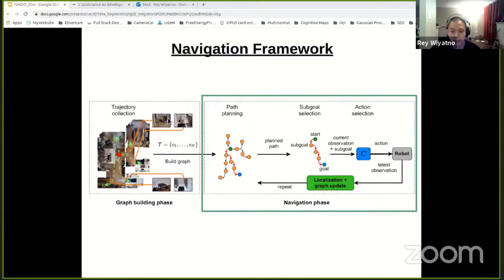And execute the action with the controller. The agent then recognizes itself and updates the graph using its latest observation, and this process then repeats until the agent reaches the final goal.